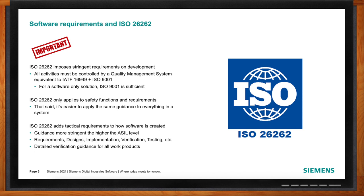However, many organizations have decided that because 26262 only applies to safety requirements, it becomes difficult to manage different kinds of requirements with different life cycles. There's nothing in 26262, especially as far as software is concerned, that is anything more than good development practice. So in many cases we just say: we'll develop everything in a way that is consistent with what 26262 is telling us — and then we don't have to worry about it later. This becomes especially true as we talk about what third-party software has to do with the standard.